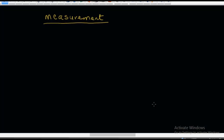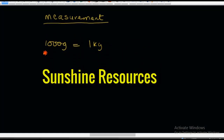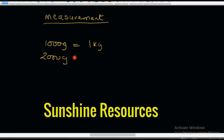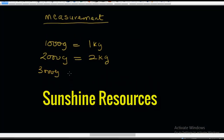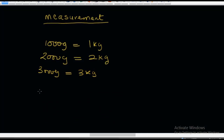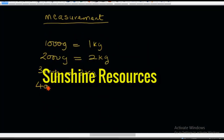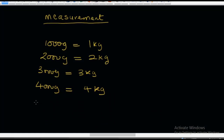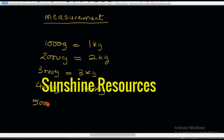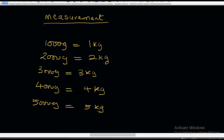The first thing to learn is that 1,000 grams is equal to 1 kilogram. This also means that 2,000 grams is equal to 2 kilograms, 3,000 grams is equal to 3 kilograms, 4,000 grams is equal to 4 kilograms, and 5,000 grams is equal to 5 kilograms. This looks so easy — I'm sure you'll get it right.